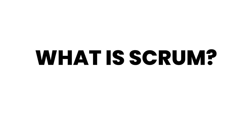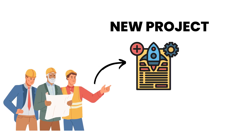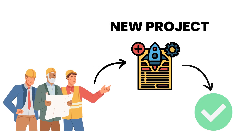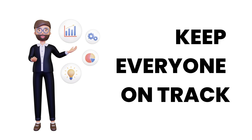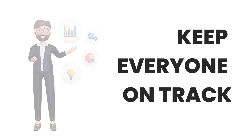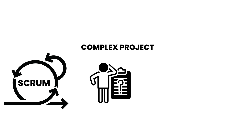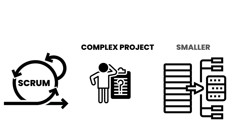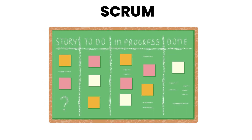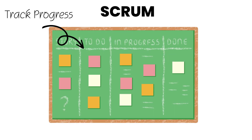So, what exactly is Scrum? Your team has a new project to complete, and you need a process to keep everyone on track. Scrum is a framework that helps teams manage and complete complex projects by breaking them down into smaller, more manageable parts. Scrum uses a visual board like this one to track progress and manage work items.